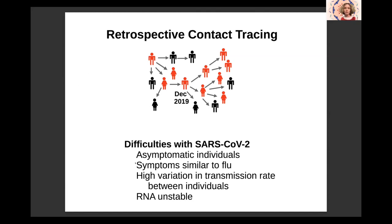Another difficulty is that the symptoms are very similar to flu. Also there is high variation in transmission rates between individuals — there are people who will infect zero persons and others 10 and even others 100, so it's really difficult to reconstruct the chain of transmission. Another difficulty is that SARS-CoV-2 is an RNA virus, which was present in infected individuals for only a few days. The RNA is also very unstable, and so if we have samples which were stored, they have to be stored in a freezer at minus 20°C. Otherwise it will be degraded, and even in a freezer, over time it will degrade. That's a problem if we want to go back in time.